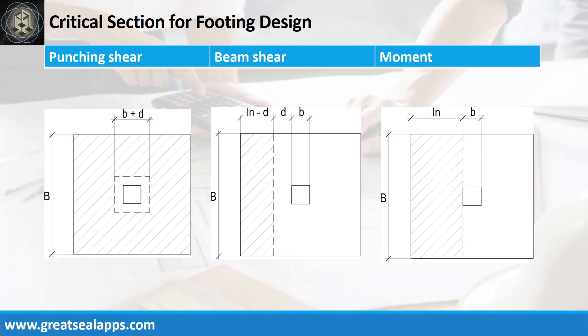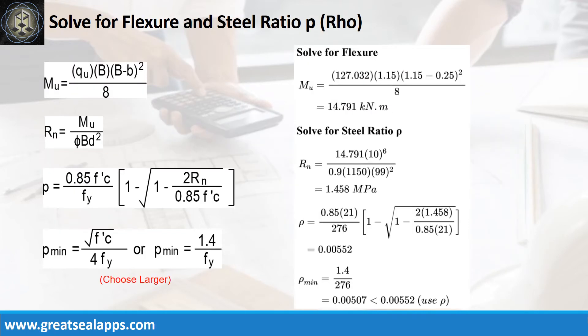Critical section diagrams for punching shear, beam shear, and moment evaluation. Given ultimate soil pressure equals 127.032 kPa, footing width equals 1.15 meters, and column side equals 250 millimeters.